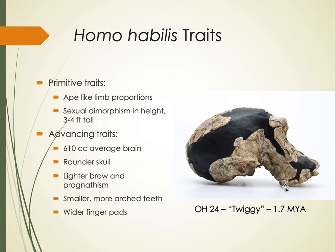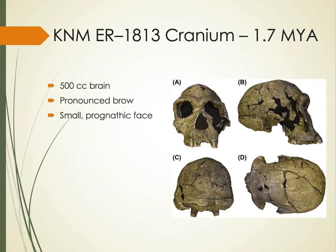Homo habilis also had another advancing trait: wide finger pads. The tips of their fingers — the bones in the tips of their fingers — were wider than we see among Australopithecines and apes, which we associate with their increased ability in manipulating tools. Looking at an early Homo habilis example, KNMER 1813, a 1.7 million year old fossil, we see a 500 cubic centimeter brain size — smaller than the average — a slightly pronounced brow, and a smaller, less prognathic face.